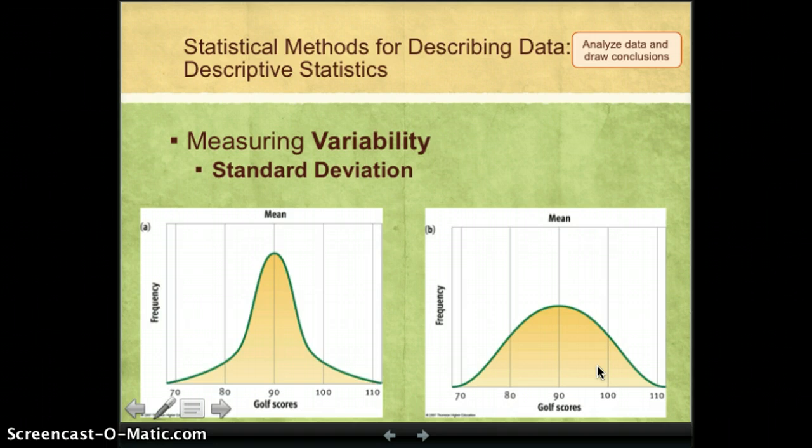Now there is a statistic that we use to determine how much the data varies. And this is called the standard deviation. And it has to do with how far away from the mean most scores are. This distribution here would have a very low variability, a very low standard deviation. Most scores are really close to each other. This particular distribution would have much higher standard deviation because there's a greater degree of variability.